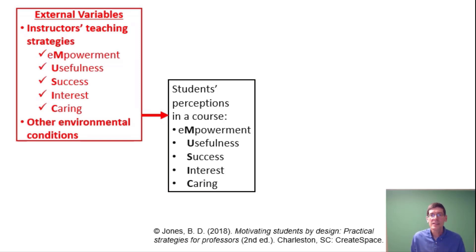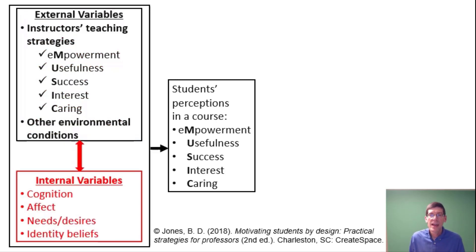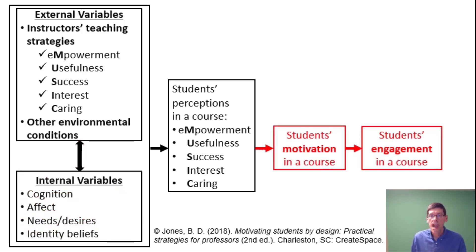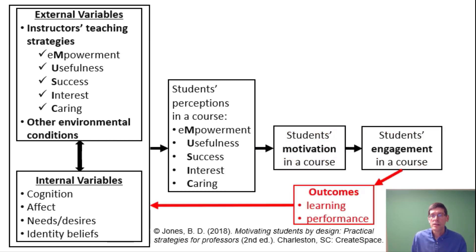How does the MUSIC model work? It all centers around students' perceptions in a course. These perceptions are affected by external variables such as instructors' teaching strategies and other environmental conditions, as well as internal variables like cognition, affect, needs, and identity. These internal variables interact with external variables to affect students' perceptions, which then affect their motivation and engagement, and ultimately outcomes such as learning and performance.